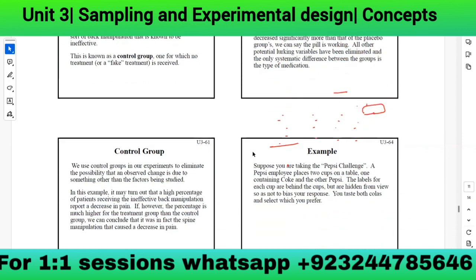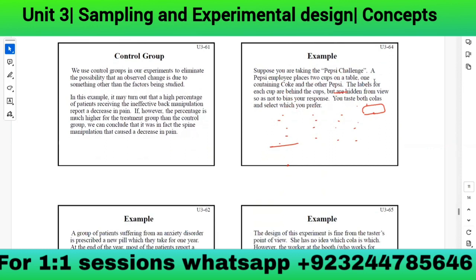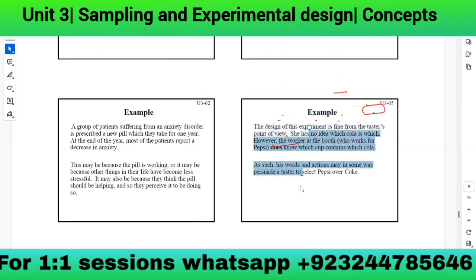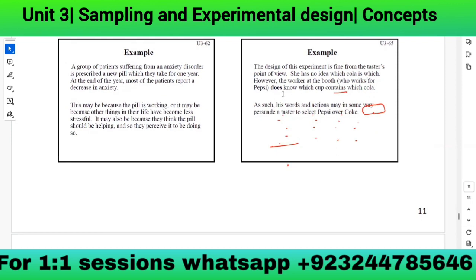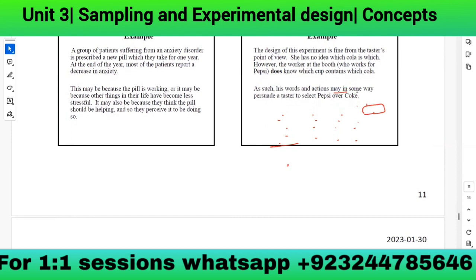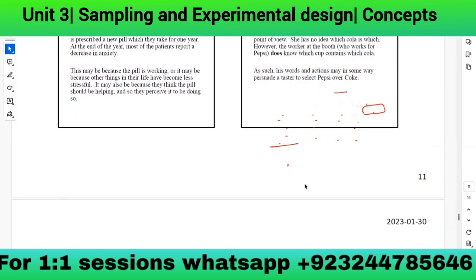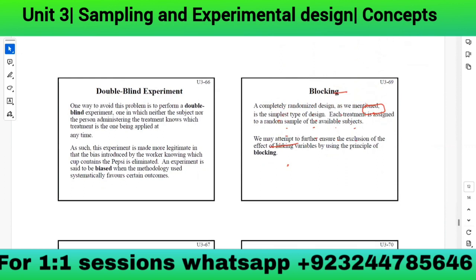A Pepsi challenge example: a Pepsi employee places two cups on a table — one containing Coke, one Pepsi — with labels hidden. The taster doesn't know which is which. However, the employee working the booth does know which cup contains which cola, and his actions may influence the taster to select Pepsi. This introduces bias. To avoid this problem, a double-blind experiment is used.